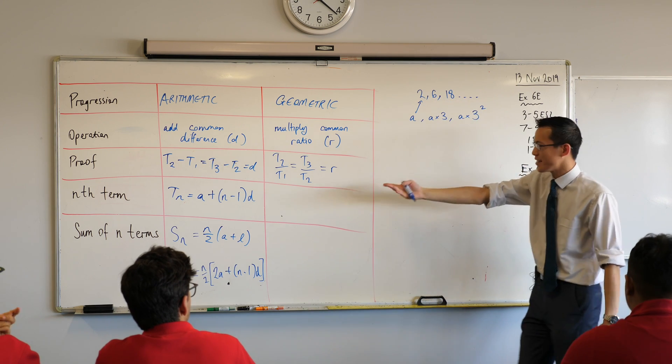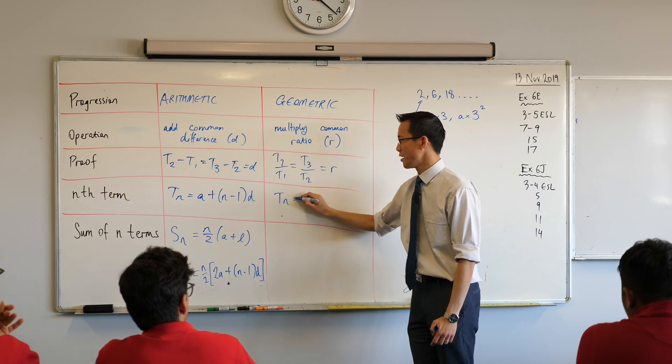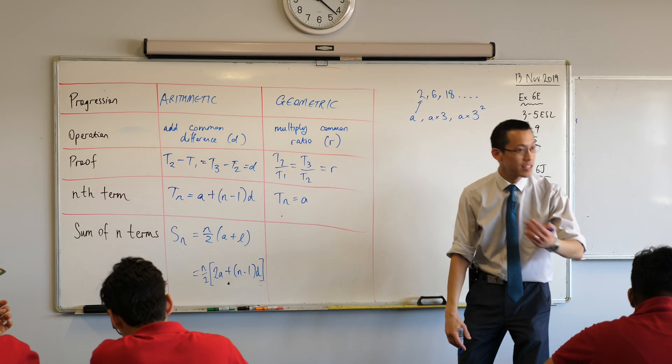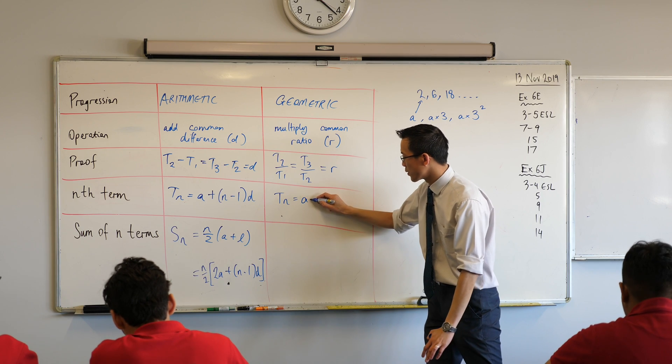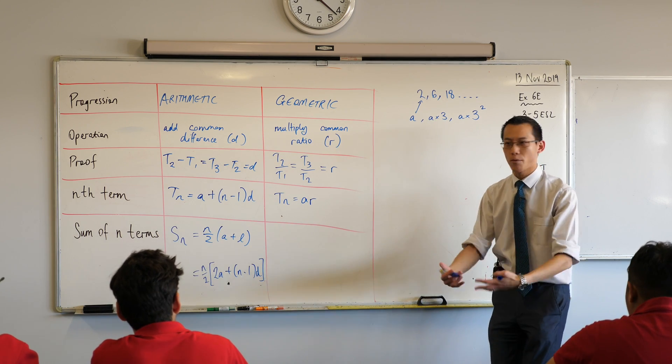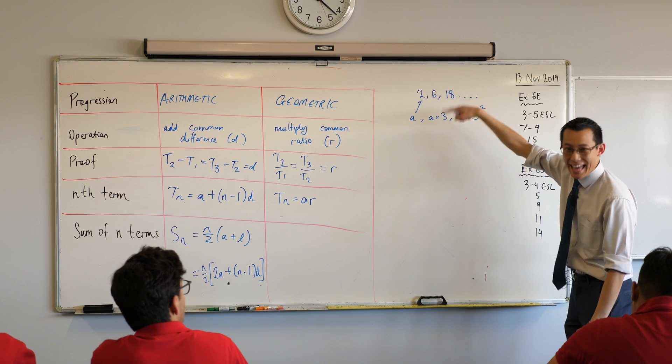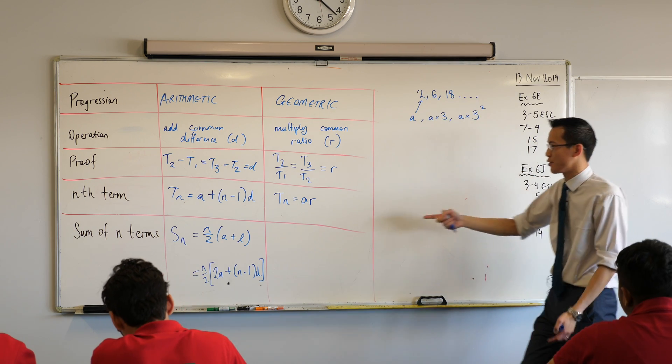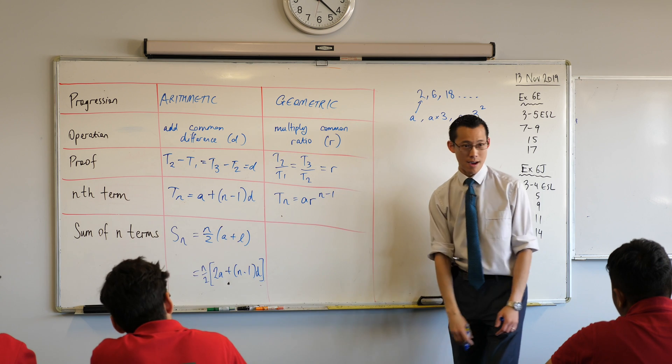If we call the first term 2, and our common ratio in this case would be, what did we say it was? Three in this case. I could write the next term as A times 3. Do you agree with that? And then I could write the next term as A times 3 times 3, because I've got to take that and multiply by 3 again. Now, we're lazy. We don't like doing it like that. So, we're just going to use index notation. That's what it's for, right? Okay. Now, just like before, do you notice, how many 3's are there here?